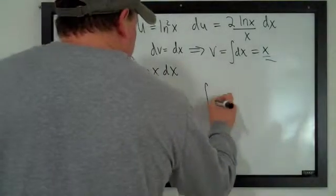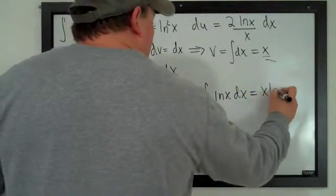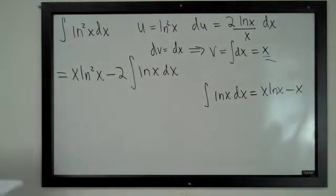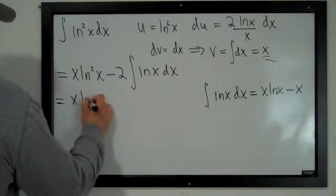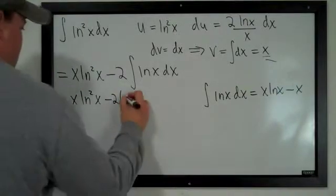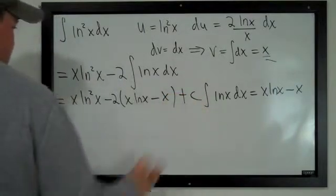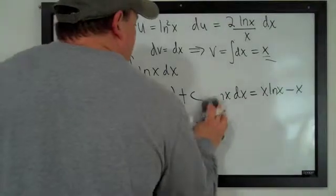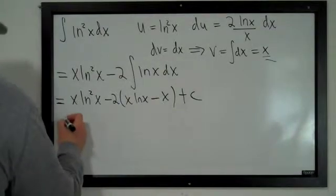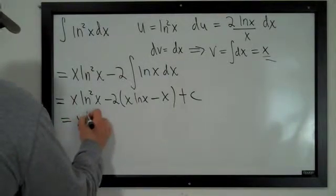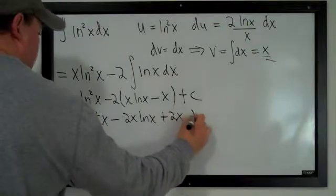We already know that the integral of log x dx equals x log x minus x plus the constant of integration. So this equals x natural log squared of x minus 2 times (x log x minus x), plus the constant of integration. Writing that out: x log squared of x minus 2x log x plus 2x plus C.